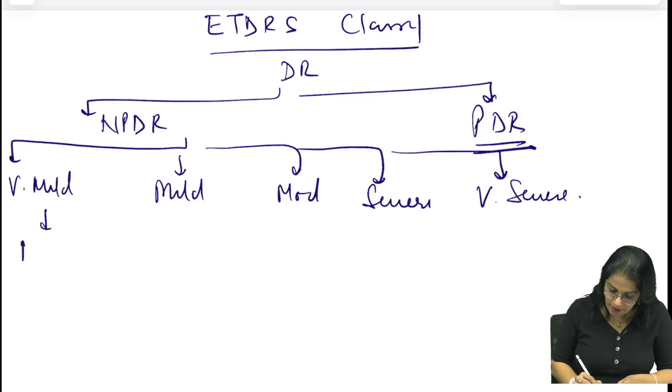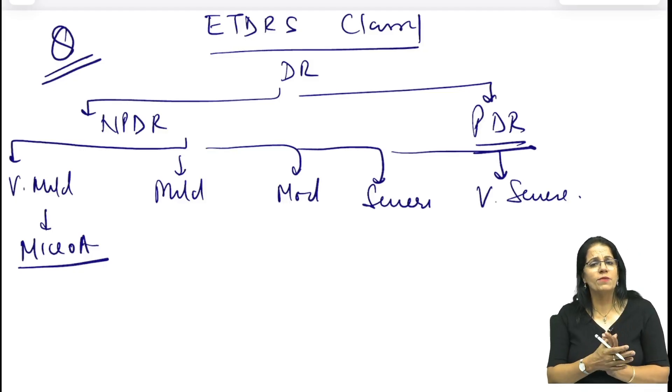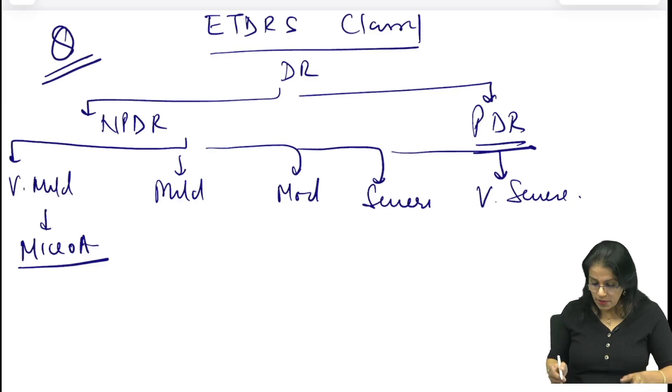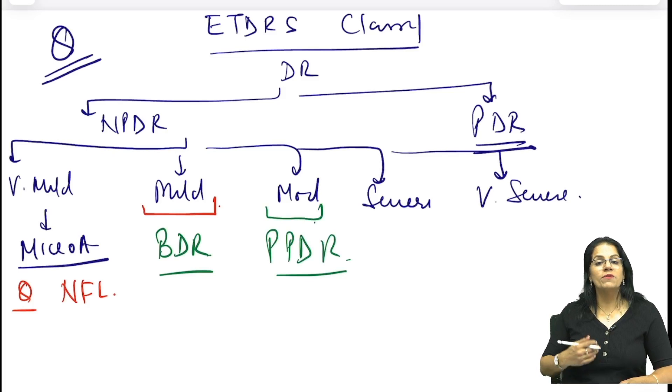Ye latest classification hai, ye aapko important hai pata hona chahiye. Very mild, actually jitni cheeze maine diabetic retinopathy pura hi topic kiya hai. Question - microaneurysm, ek sawal aata hai kis layer me present hai? Aap kya bologe? Nerve fiber layer me. Phir aao mild. Mild me kya milega? Mild me aap bologe all the features of background diabetic retinopathy, yaani microaneurysms honge, hemorrhages honge, exudates honge. Moderate me kya mil raha hai? All the features of pre-proliferative diabetic retinopathy, matlab more number of cotton wool spots, IRMA, looping and beading of capillaries. Ye sab moderate honge.